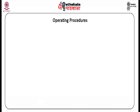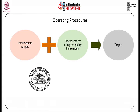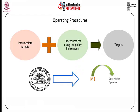Operating procedures, also known as operating or policy regimes, are a combination of intermediate targets and procedures for using policy instruments to achieve the targets. For example, the RBI might choose a particular level of money supply, M1, as an intermediate target and use certain open market operations to achieve it.